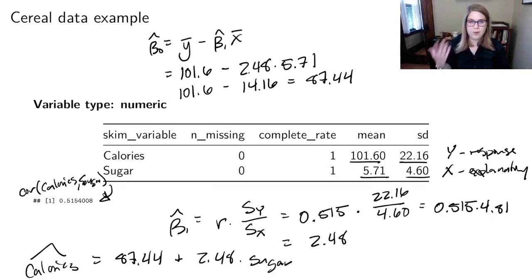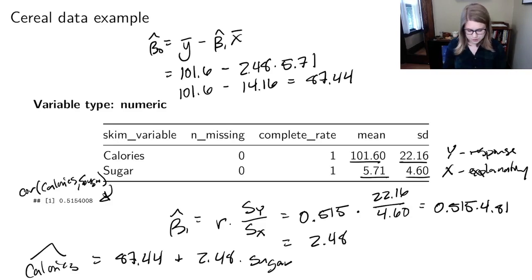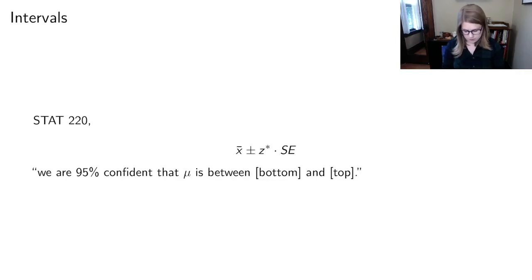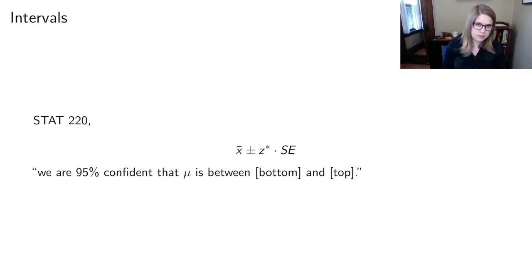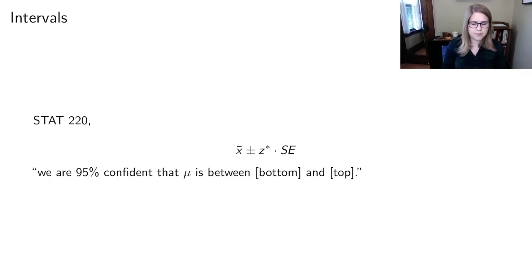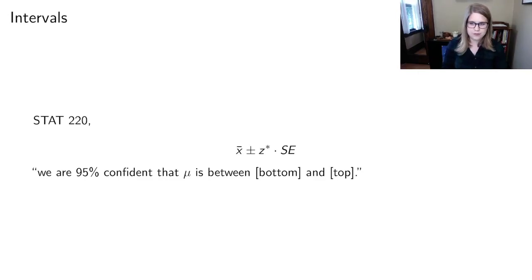So again, on an exam I'd give you some summary statistics and ask what the equation of the line is. There's one more thing from chapter 2 I'd like to talk about before you go through the lab, and that is intervals. Remember in Stat 220, if we were going to do an interval, it would be a statistic plus or minus something that depends on the distribution and the alpha level times the standard error — like X_bar plus or minus a Z* value times a standard error. We'd interpret it as: we are 95% confident that the true mean is between the bottom and the top of the interval.